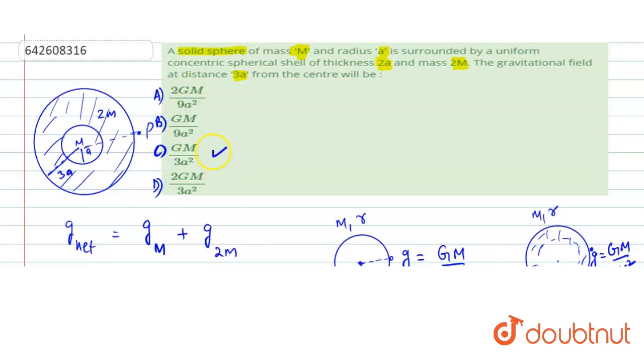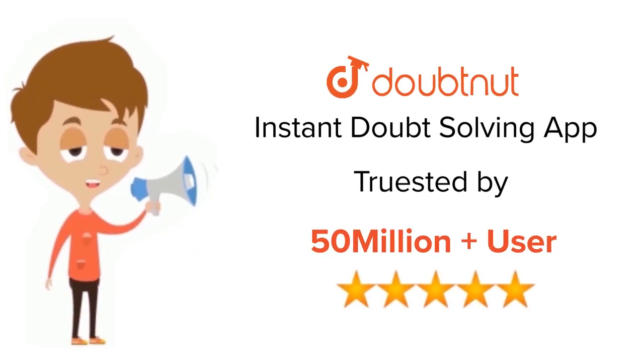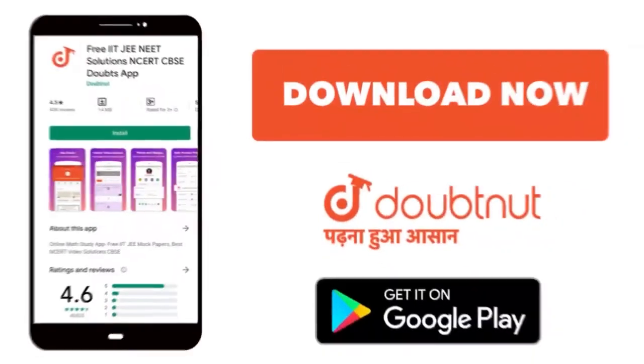which is given to us in option C. I hope this helps you with the answer. Thank you. For class 6-12, IIT-JEE and NEET level, trusted by more than 5 crore students, download Doubtnut app today.